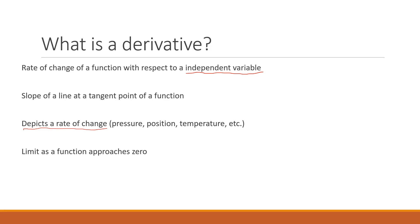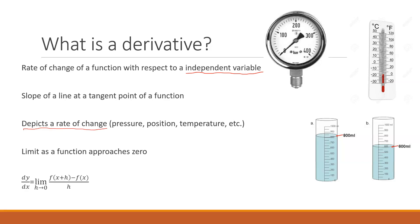A more technical definition is the limit as a function approaches zero — this is the mathematical interpretation of that last definition. We'll go through this in a little more detail. The rate of change with respect to an independent variable is what you can look at here. You can see pressure, temperature, and even things like volume — when you're looking at it with respect to time, that gives you flow rate.